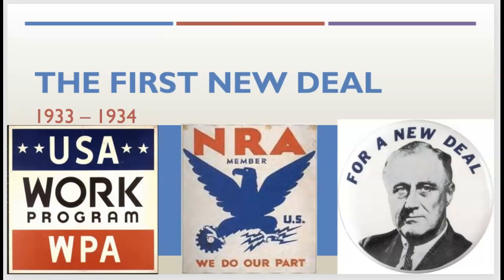Welcome back. Last time we talked about the Great Depression, and we ended with the presidential election in which FDR, Franklin Delano Roosevelt, is elected as president. What we're going to look at now is what FDR does to try to help get the country back on its feet and get the economy moving again. What really caused the Great Depression is not just the stock market crash, but the fact that people were hoarding their money and no money was actually in circulation.